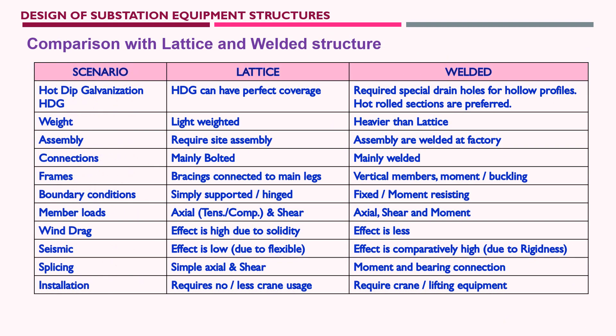Next, we compare lattice and welded structures. Looking at a comparison table with three columns — scenario, lattice type, and welded type. For hot-dip galvanization: in lattice structures, hot-dip galvanization provides perfect coverage of the entire structural surface. For welded structures using hollow profiles such as circular hollow, square hollow, or rectangular hollow, holes must be provided to drain the galvanization liquid — at the bottom, top mounting plate, or in the sides of the hollow profiles.